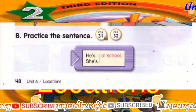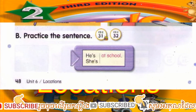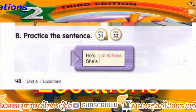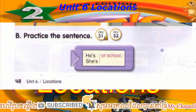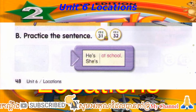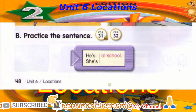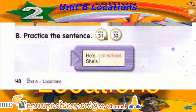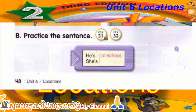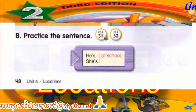Track 31. B. Practice the sentence. She's at school.